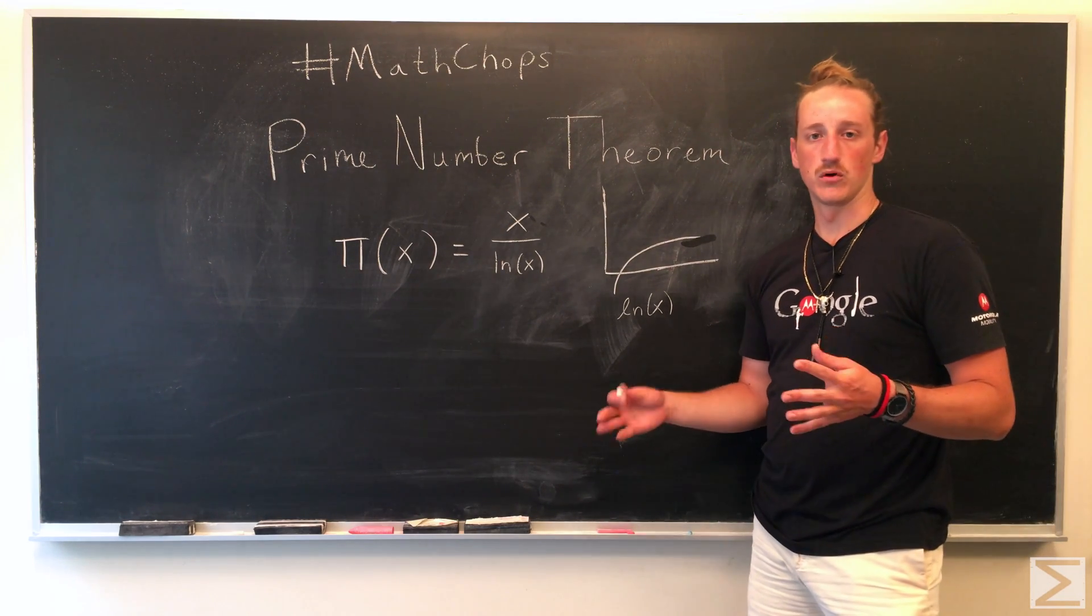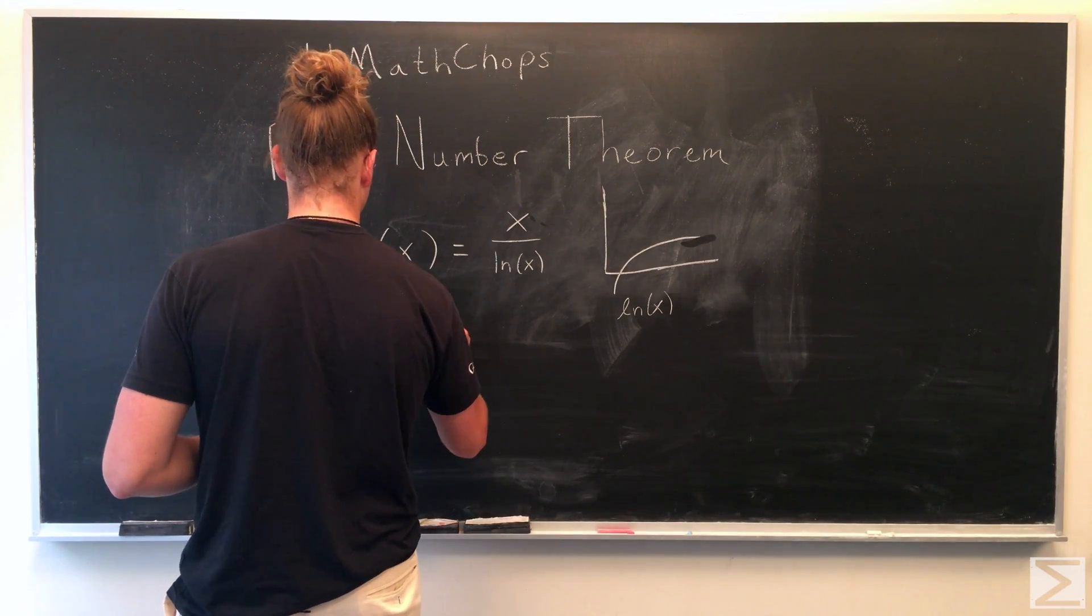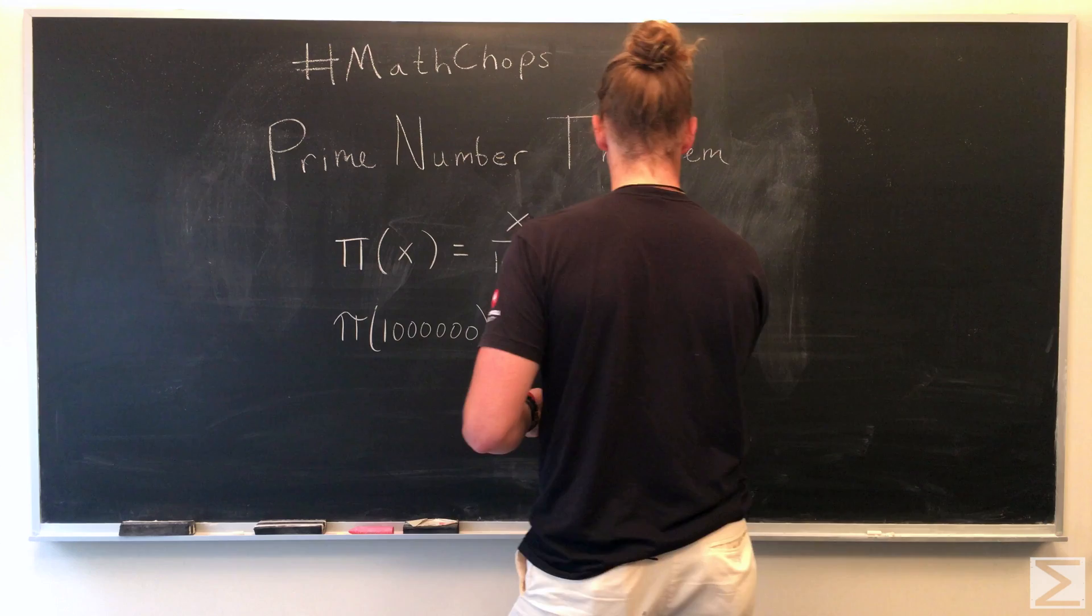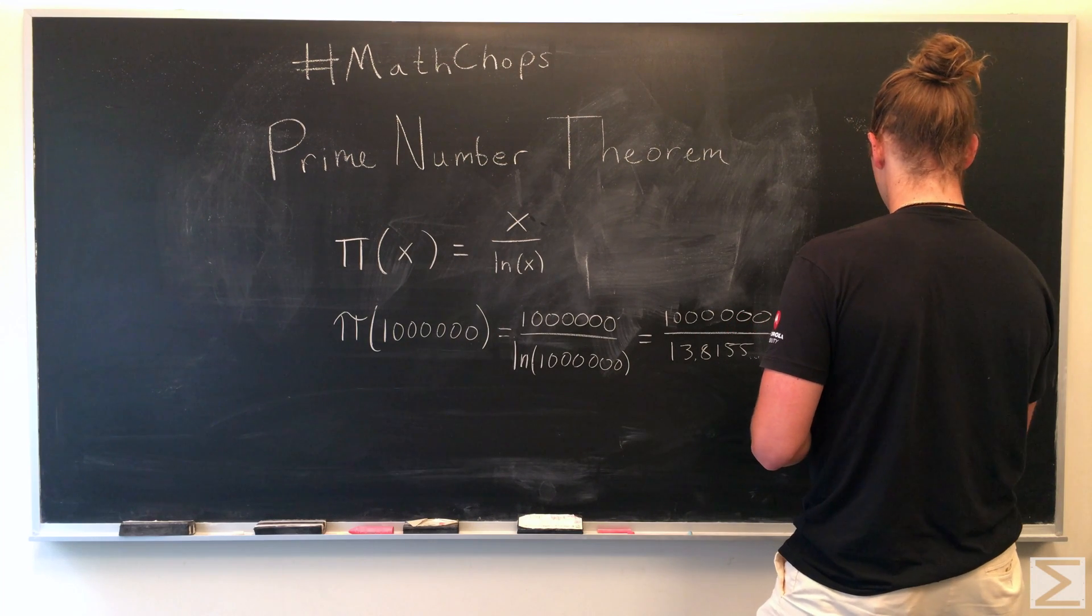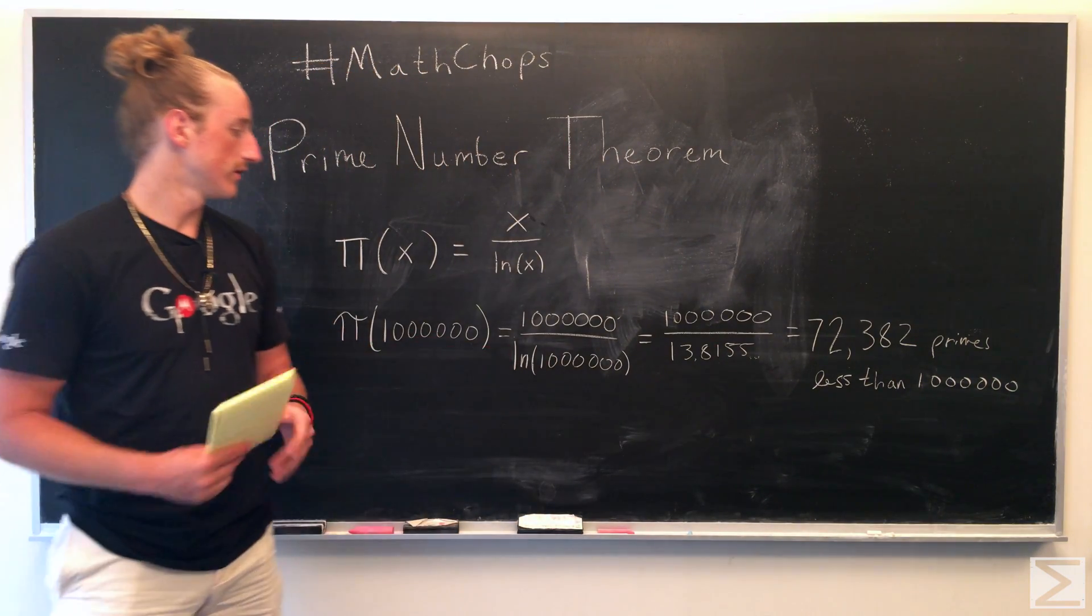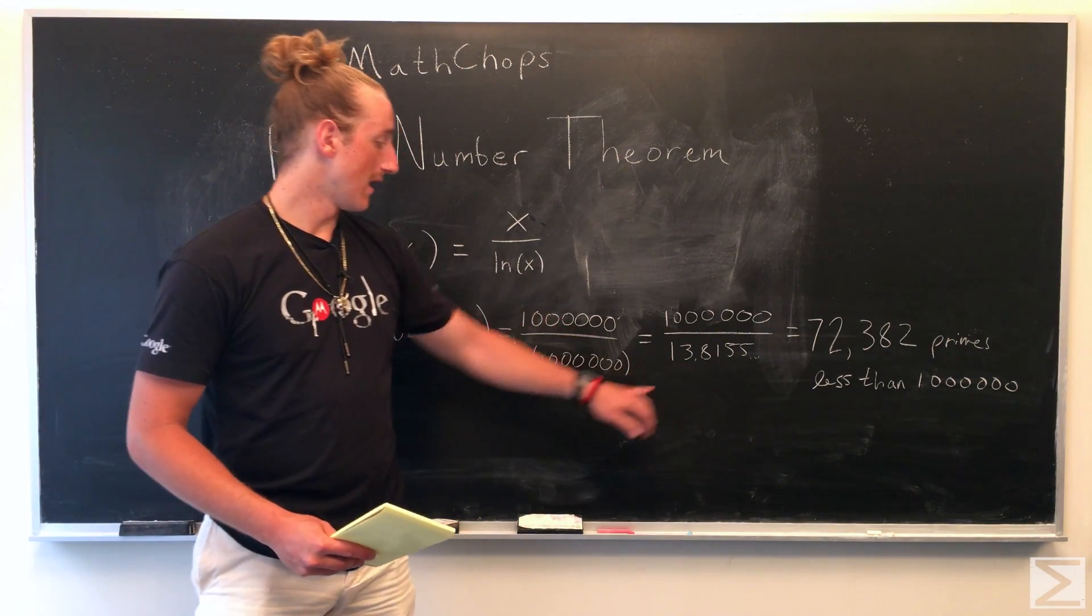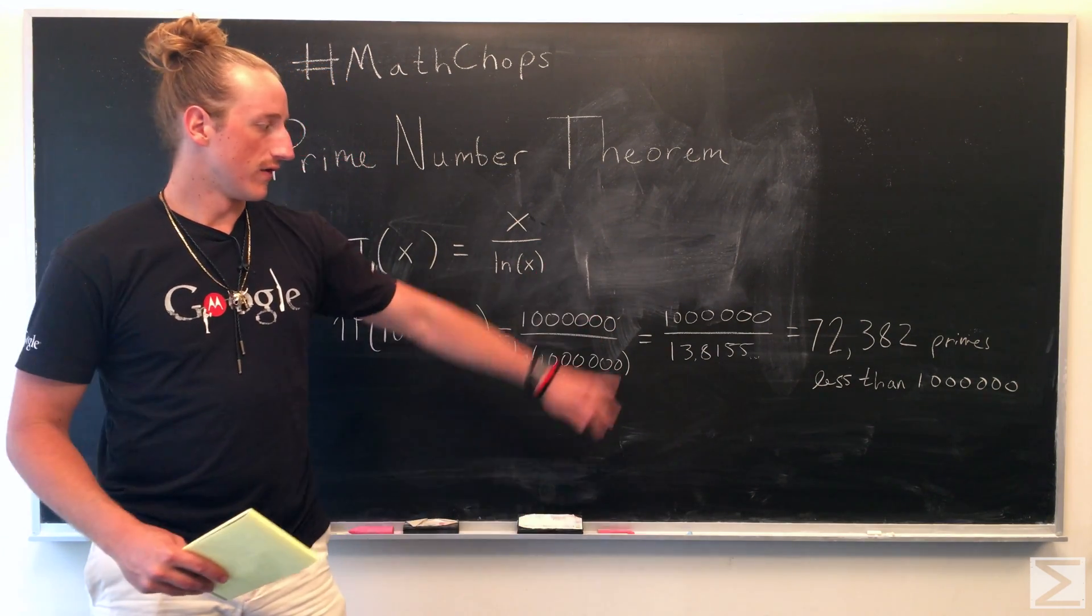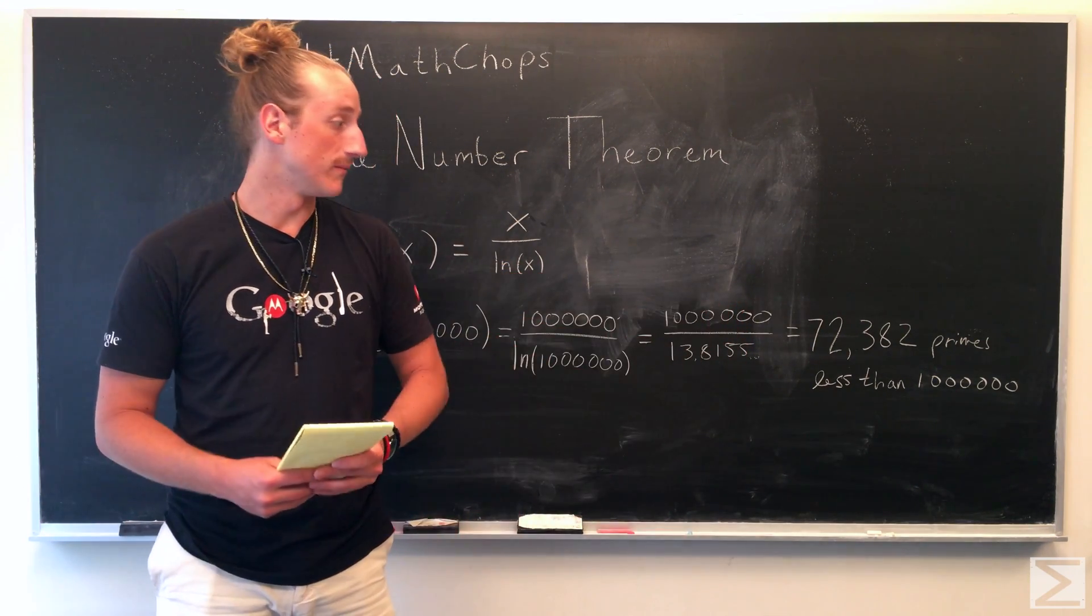And so if we want to talk about a number, let's say a million, we can do the math on that. So plugging into the formula, we see a million divided by ln of a million. And ln of one million is 13.8155. And then dividing a million by this number, we get 72,382 primes that are less than one million.